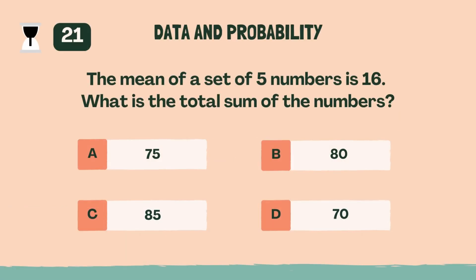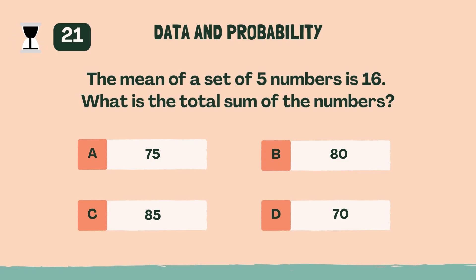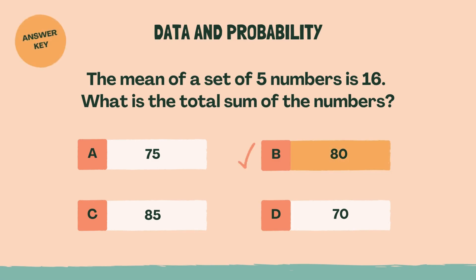The mean of a set of 5 numbers is 16. What is the total sum of the numbers? B, 80.